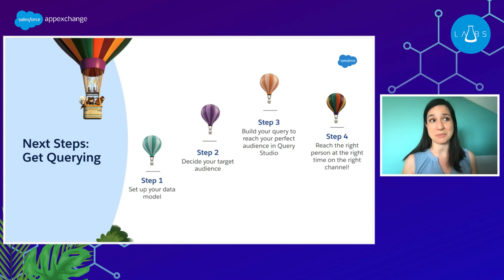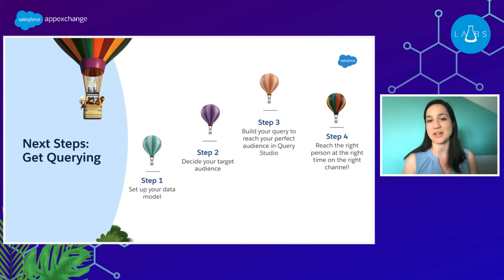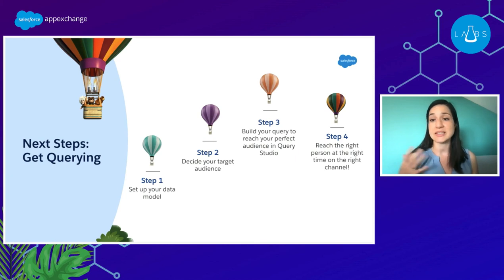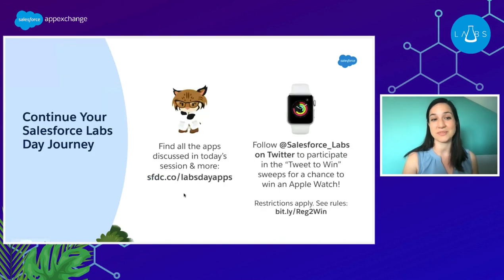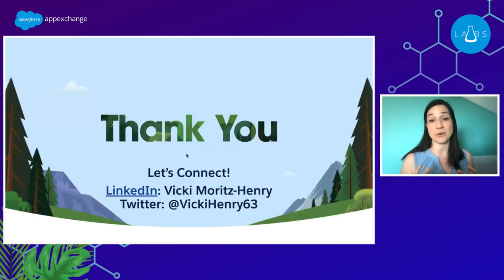Here are some next steps because it is a whole process of deciding what that perfect target audience is and then using Query Studio to help you get there. Set up your data model in Marketing Cloud, decide your target audience, build your query to reach your perfect audience in Query Studio, and then go ahead and reach the right person at the right time on the right channel. Thank you all for joining us today — let's connect on LinkedIn and Twitter.